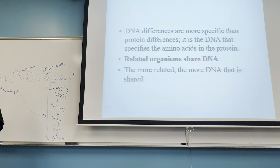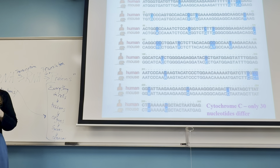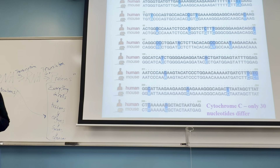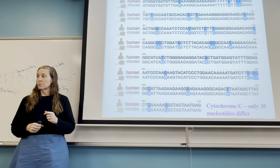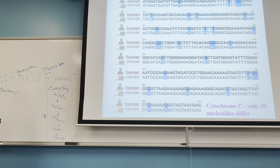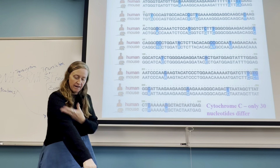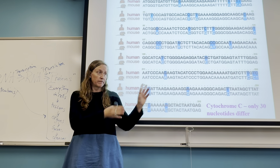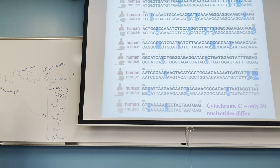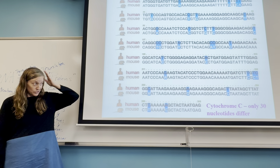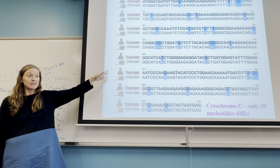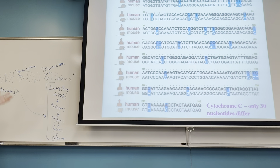Looking at the cytochrome c sequence between a human and a mouse: out of 315 nucleotides, this protein only varies by 30 nucleotides — only a 10% difference between us and a mouse. Mice are also vertebrates with the same four-limb structure, a backbone, a brain, and a similar digestive system. There are many ways to show we are closely related to mice, and now we can go down to the gene level and show just a 10% difference within this gene.